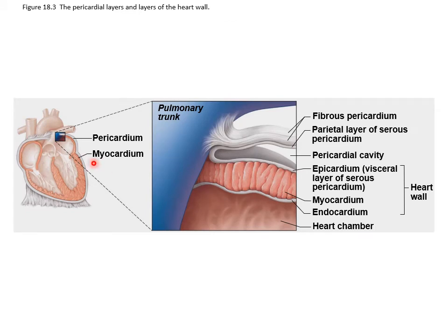Here's a look at a cutaway section of the pericardial layers and layers of the heart wall. It's showing you the fibrous pericardium attached to the pulmonary trunk, then the parietal layer of the pericardium, the pericardial cavity, and then the epicardium — which is the same as the visceral layer of the serous pericardium.